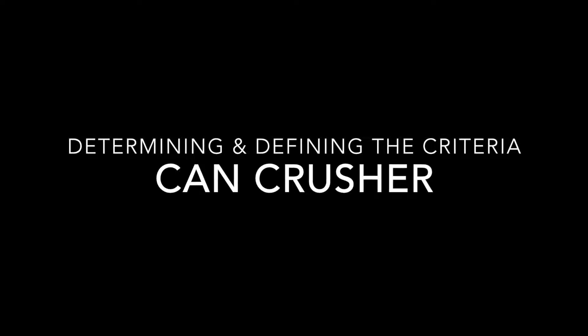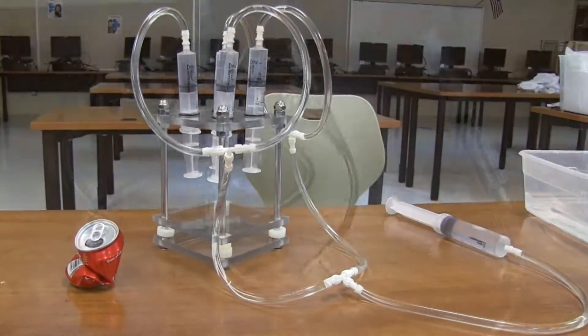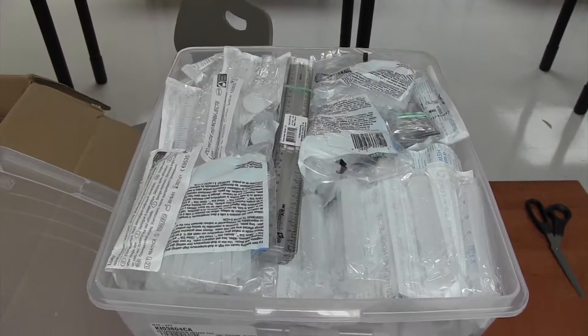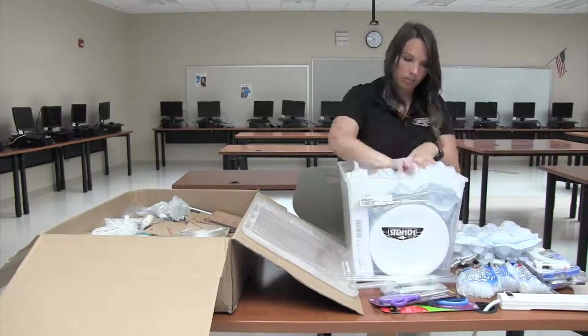The can crusher is one of the two hydraulic activities in the determining and defining the criteria unit. The materials for both the can crusher and hydraulic arm activities will ship together.